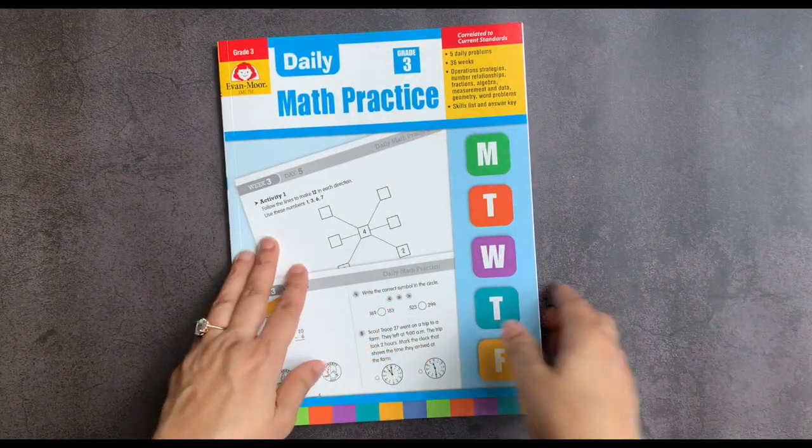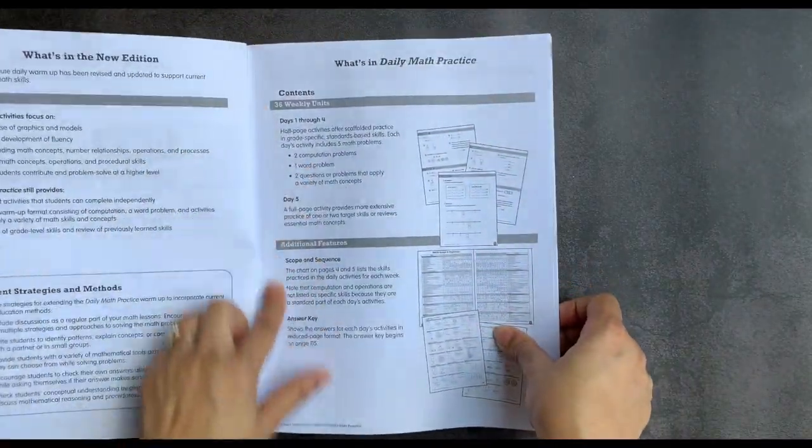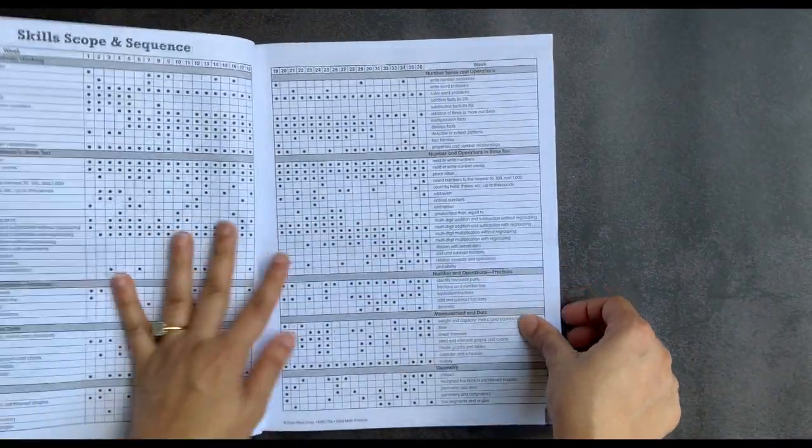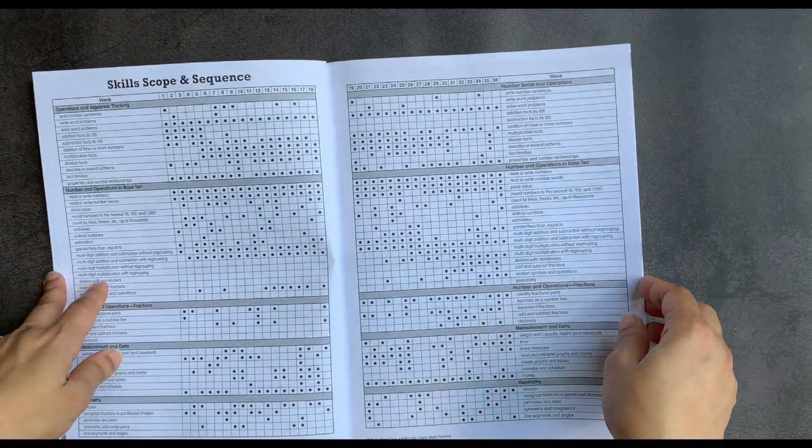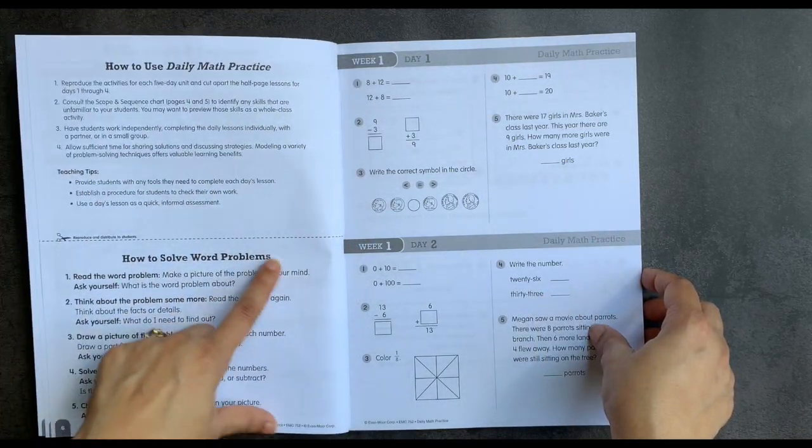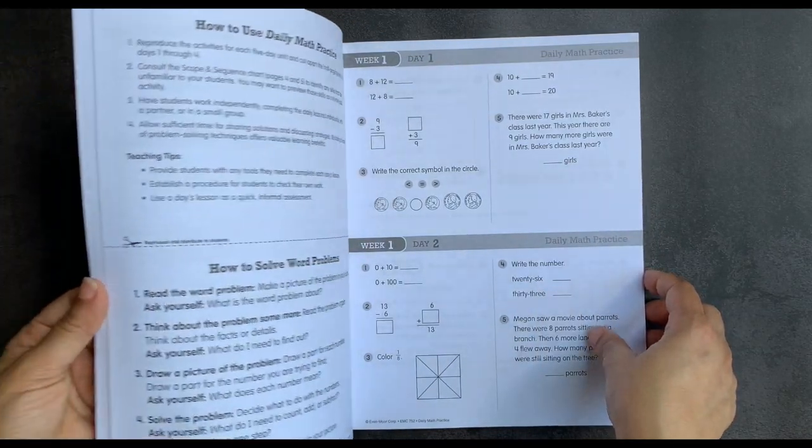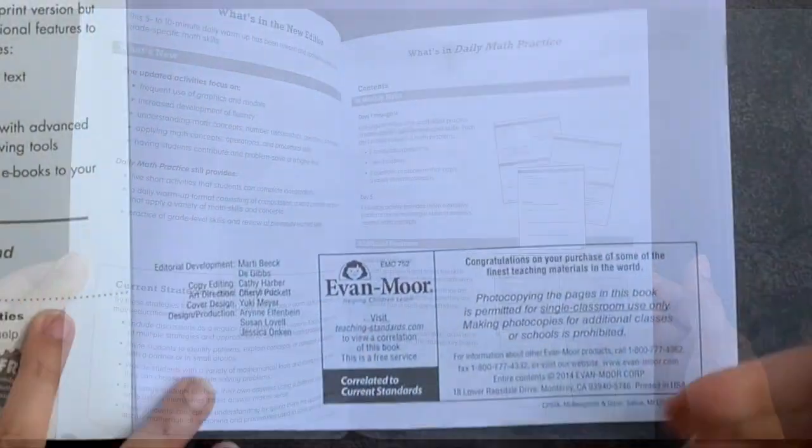It is perforated pages and it includes a complete skill scope and sequence that is correlated to state standards. It also includes some teaching prompts here and a how to solve word problems checklist that you can copy and laminate and hand out to your students. Evan Moor is a publisher that does allow you to reproduce pages in the book for single classroom use.